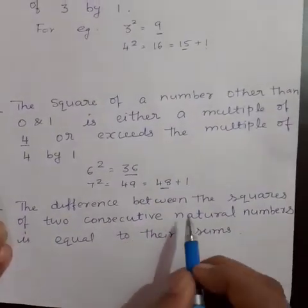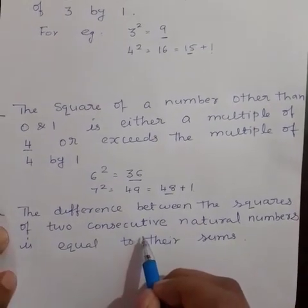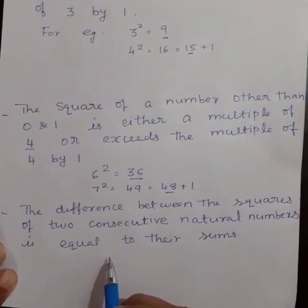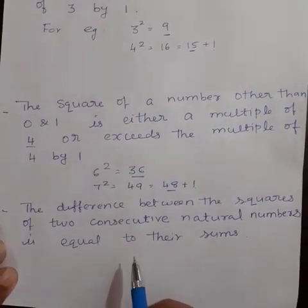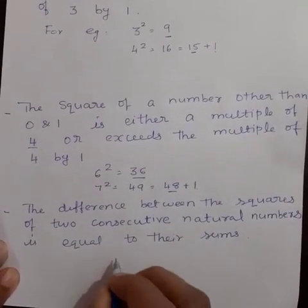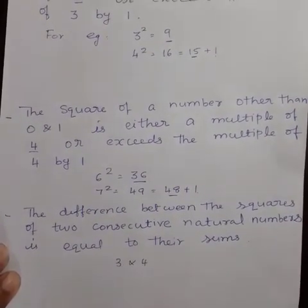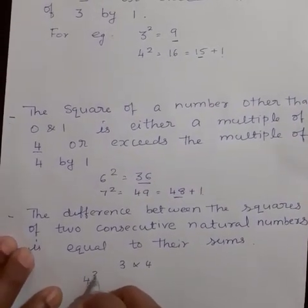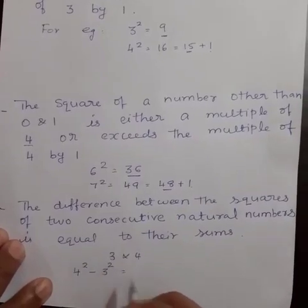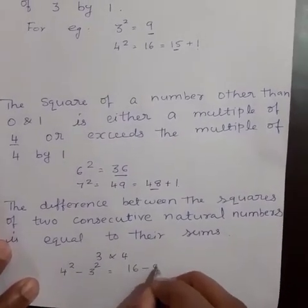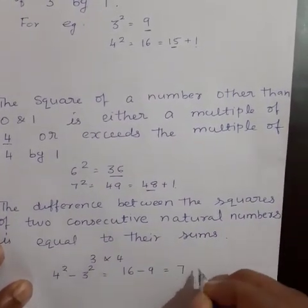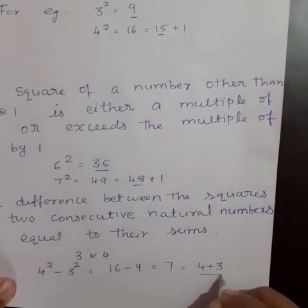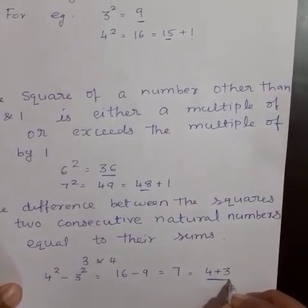Next, the difference between the squares of two consecutive natural numbers is equal to their sum. Let us take two consecutive natural numbers, 3 and 4. The difference between these squares is 4 square minus 3 square. That is equal to 16 minus 9, that is equal to 7. And we know that 7 is equal to 4 plus 3, that is, the sum of those natural numbers.